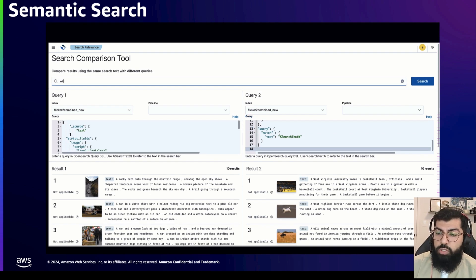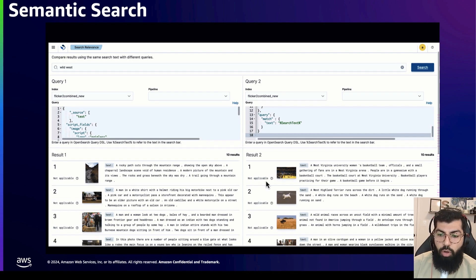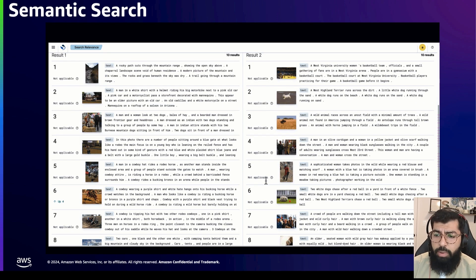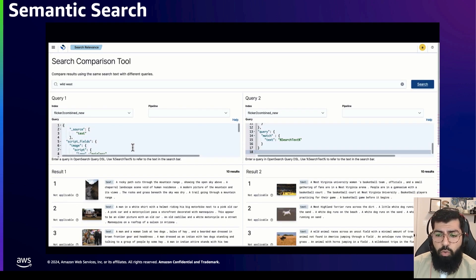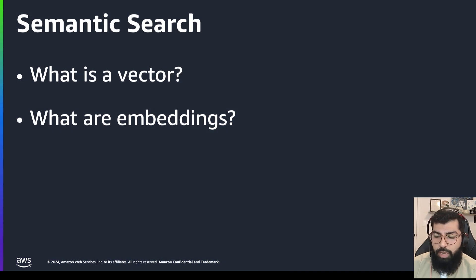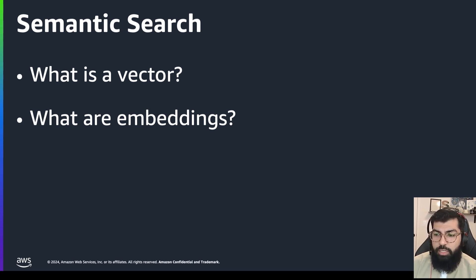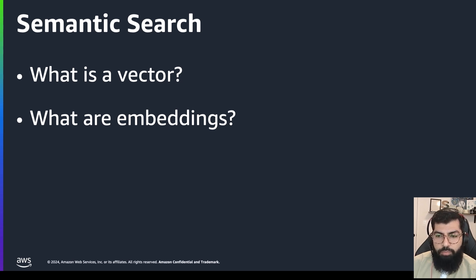Semantic search can also detect more subtle relationships between words like opposites, or whether it has a broader meaning or a narrower meaning. Semantic search tends to produce more accurate and relevant results when the information goal is more ambiguous. OpenSearch uses vector embeddings to implement semantic search. We'll cover vectors and embeddings and go much more in-depth on semantic search and how to implement it in upcoming videos. Stay tuned for those. And if you have other topics you'd like us to talk about, please let us know in the comments below. Thank you and goodbye.